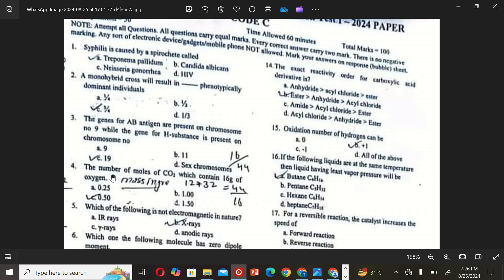The next MCQ is: The number of moles of CO2 which contains 16 grams of oxygen? A: 0.25, B: 1.00, C: 0.250, and D: 1.50. So the correct option is C.